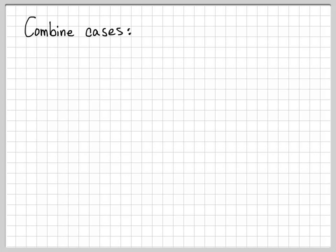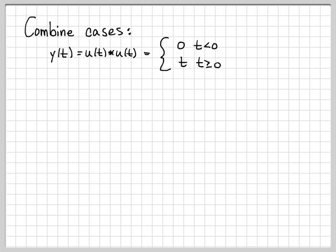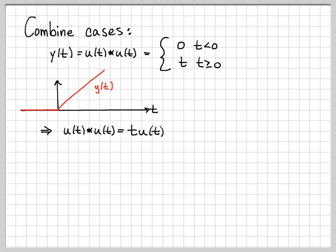Combining the two cases — t less than 0 gives 0, and t greater than or equal to 0 gives t — we can write the convolution u of t convolved with u of t as a piecewise equation. Sketched versus time, it is 0 for all negative time and then linearly increases from time 0 onward — it is a ramp function. A more compact expression is t times u of t, where the unit step turns everything off for t less than 0. So the final answer is: unit step convolved with unit step equals t times the unit step.